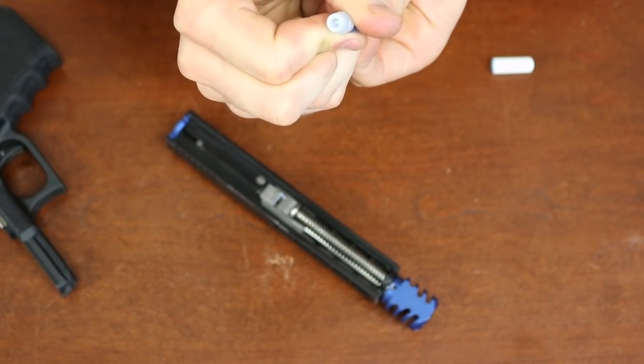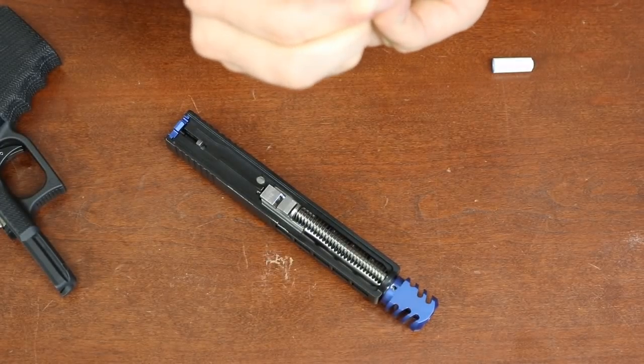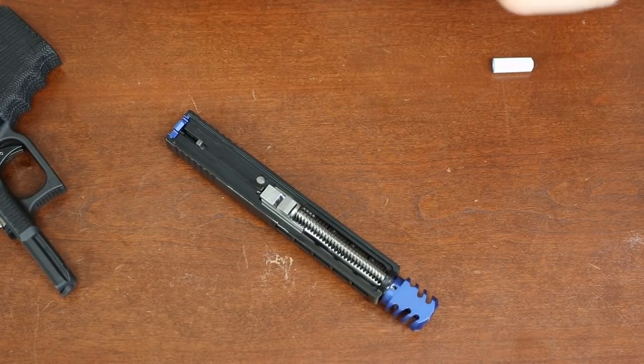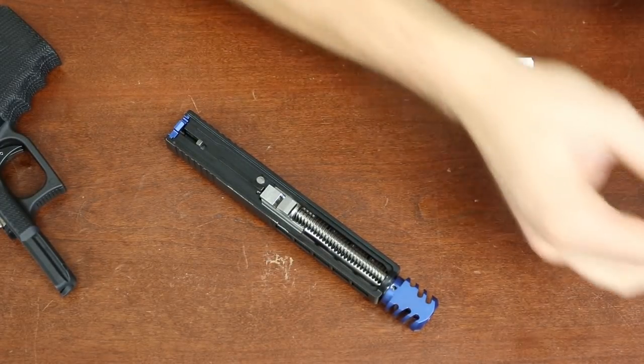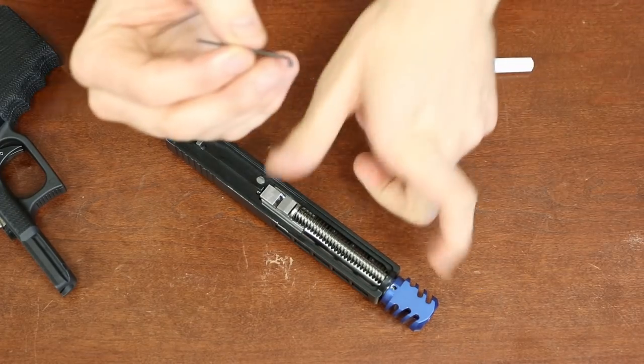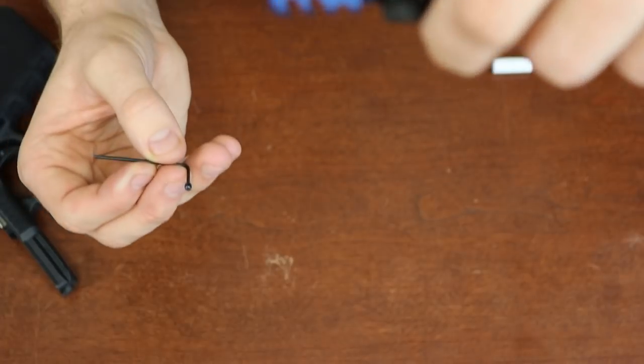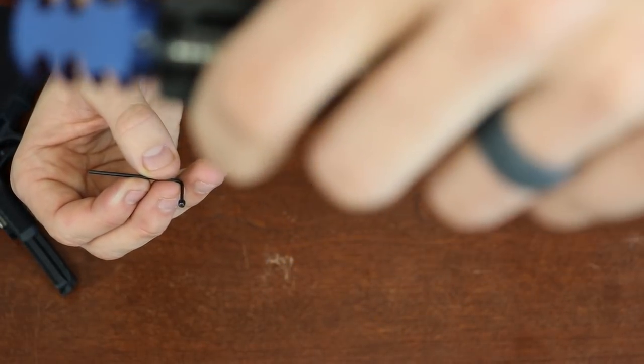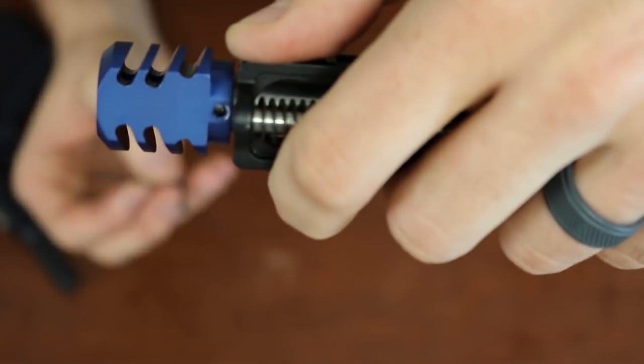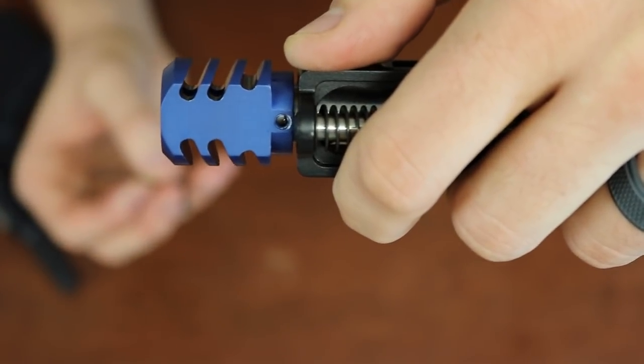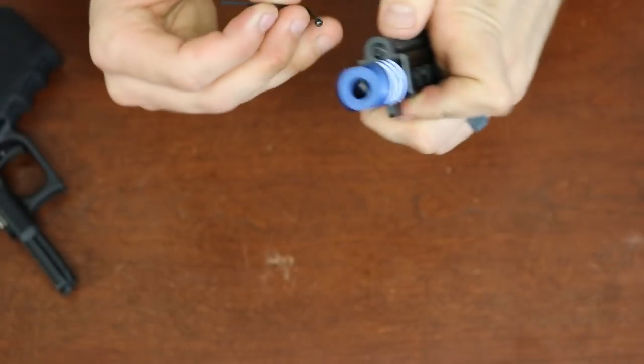A little bit more Loctite on your set screw. Now, again, you just need a little bit. You're going to see where you screw that in. It's right on the bottom of the compensator.